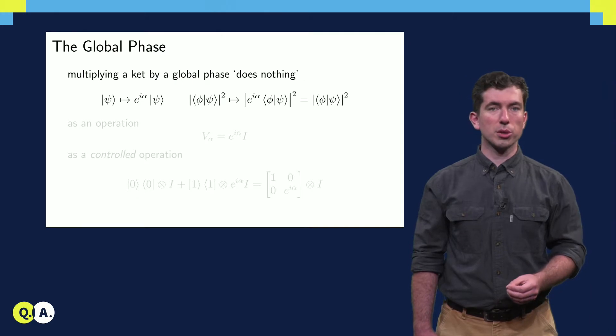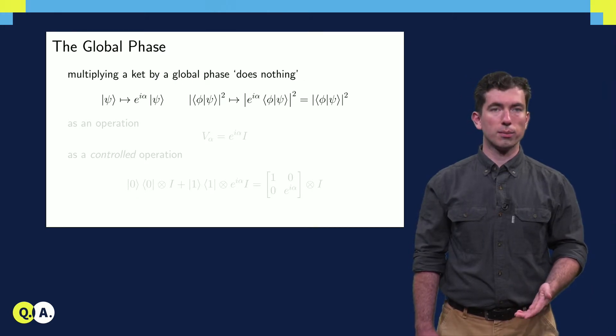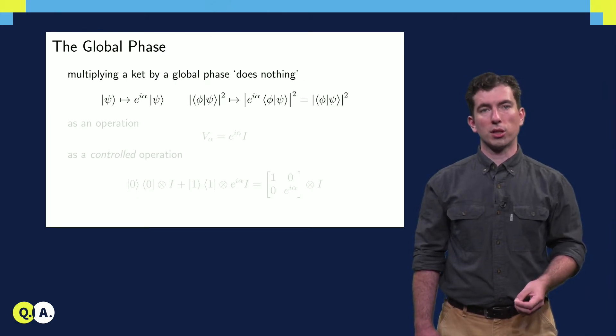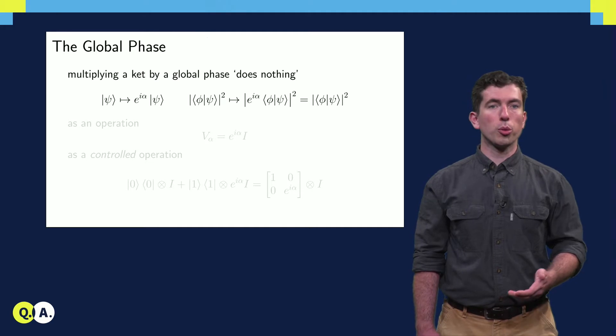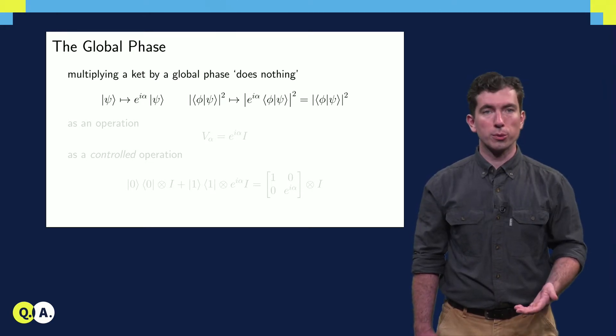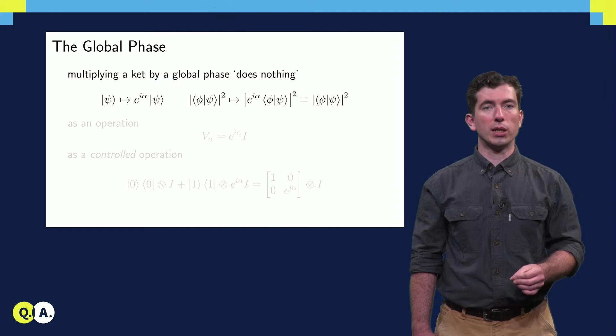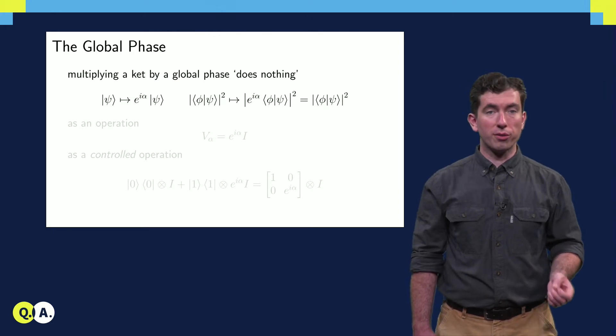Let's first look at the simplest of all phases, the global phase. If we had an operation that multiplied a state by a global phase, like a unitary does when one of its eigenstates is input, the output probabilities that are defined by Born's rule don't change. This means that the global phase has no physically measurable effect.